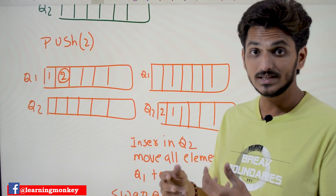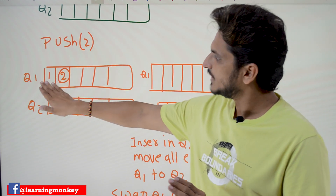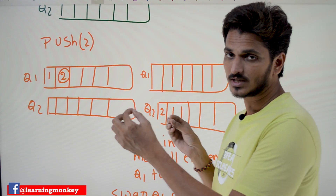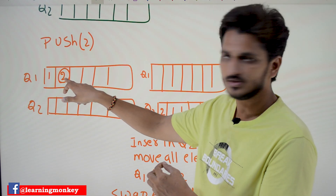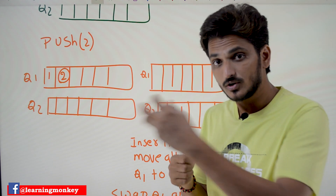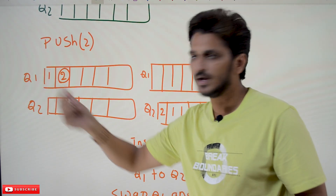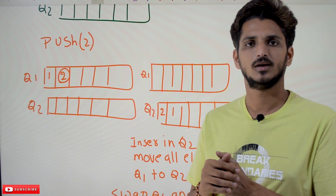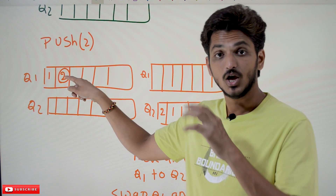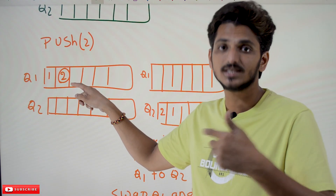Next, push two. If you want to insert the second element, in queue, elements will always be inserted at the end, so two is going to be inserted here. If you want to remove an element from a queue, the first element will always be removed — that is first in first out. But we need last in first out. Two is the last inserted element; we need to remove this last inserted element if it is to work as a stack.